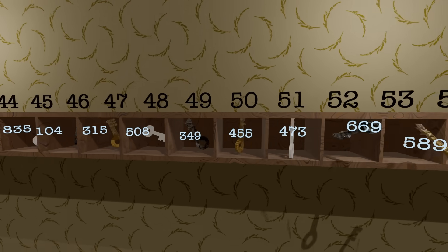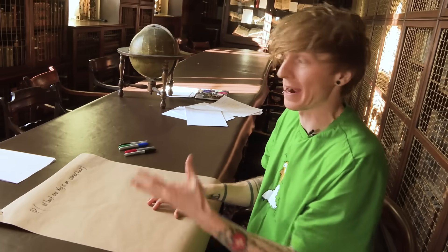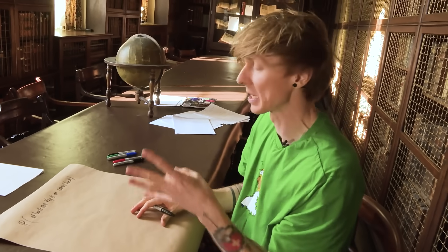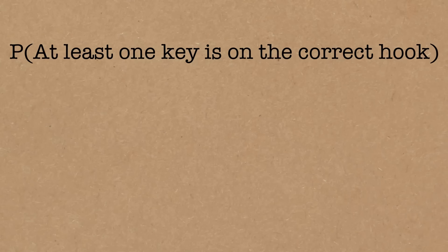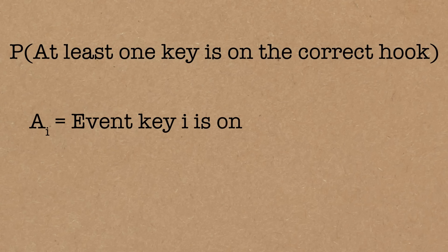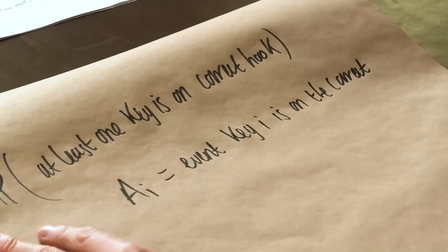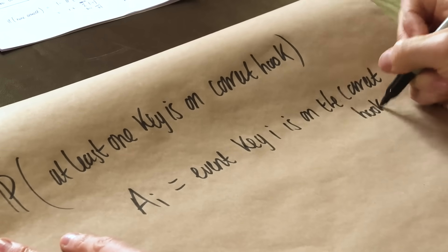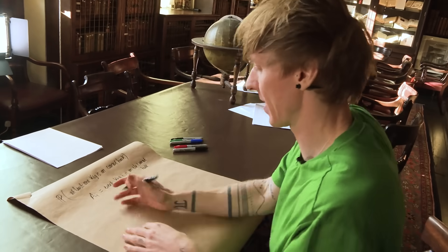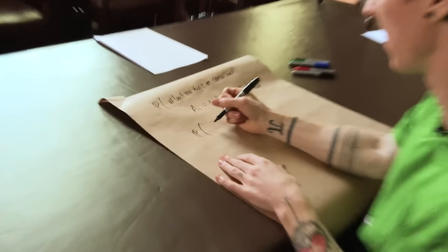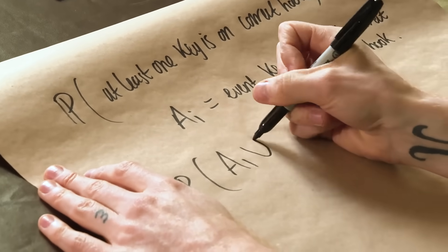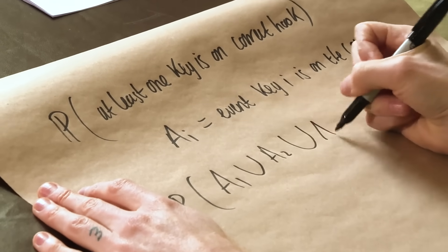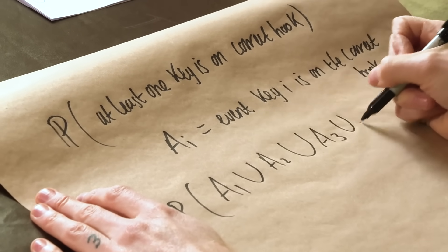A good way to start with any probability problem, especially when we're talking about infinite numbers of items, let's use some helpful notation. We're going to say that a_i is going to be the event that key i is on the correct hook, just so we have a way of numbering what's happening. So what we actually want is the probability that maybe a_1 is correct, or a_2 is correct, or a_3 is correct, or dot dot dot.